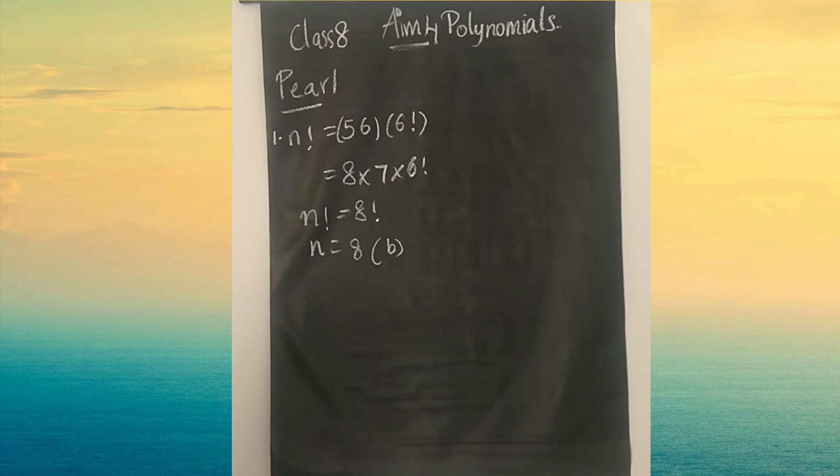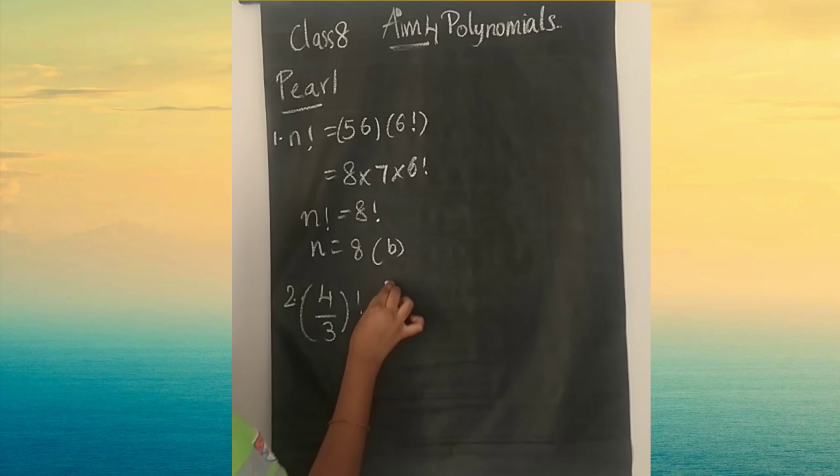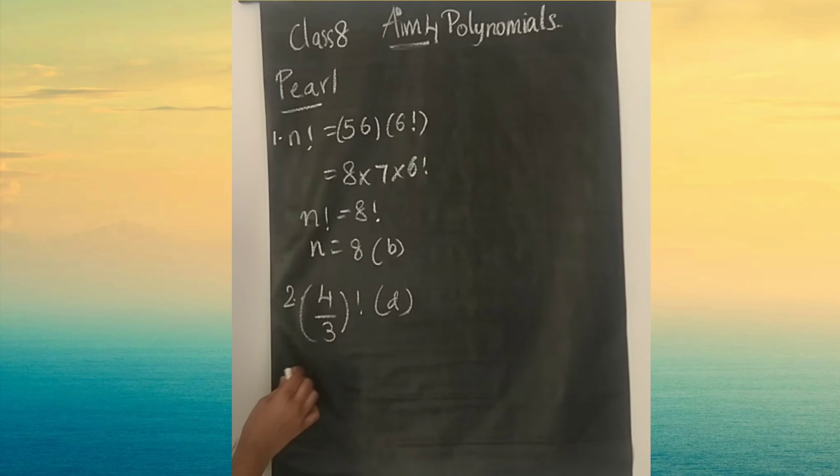Now let's look at the second question: 4 by 3 whole factorial. So this is undefined, it is not defined because fractions do not have factorial. So option D. Third one: we have minus 5 factorial. For negatives also we don't have factorial, so it's option D again, does not exist.